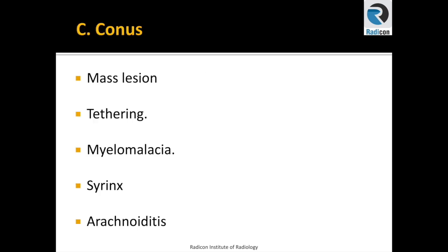In the lumbar spine imaging, only the lower part of the Cod or conus is seen. Pathologies in this region can be easily missed as more focus is always on the disc levels. It is important to rule out conus pathology such as mass lesions, tethering, myelomalacia, syrinx, or inflammatory changes such as arachnoiditis.